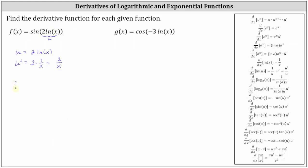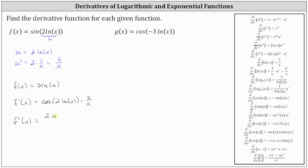Now we can think of the original function as f of x equals sine u, and the derivative of sine u with respect to x is equal to cosine u times u prime. Therefore f prime of x is equal to cosine of two natural log x times two divided by x. Simplifying, we have f prime of x equals two cosine of two natural log x all divided by x.